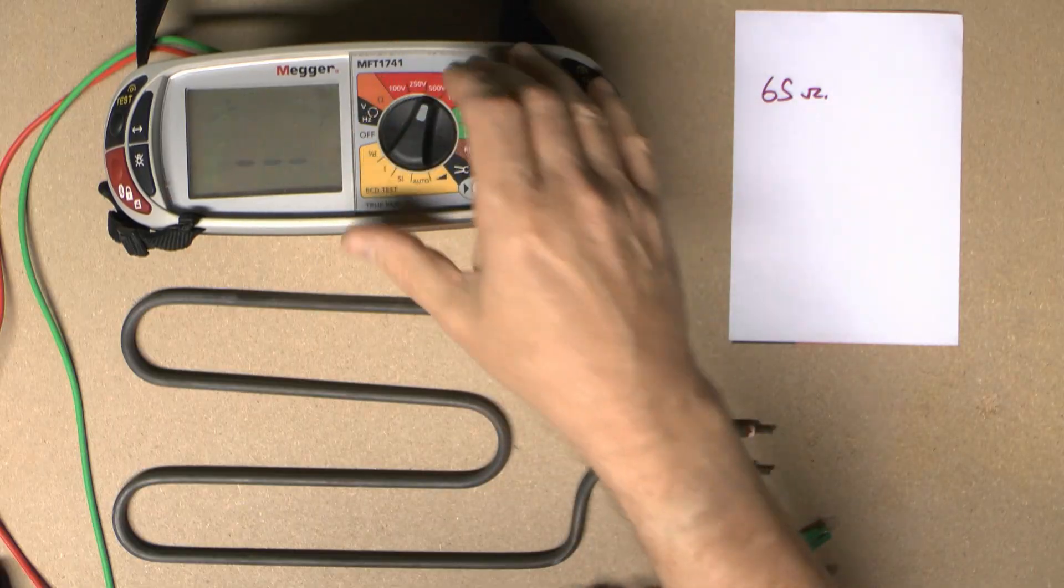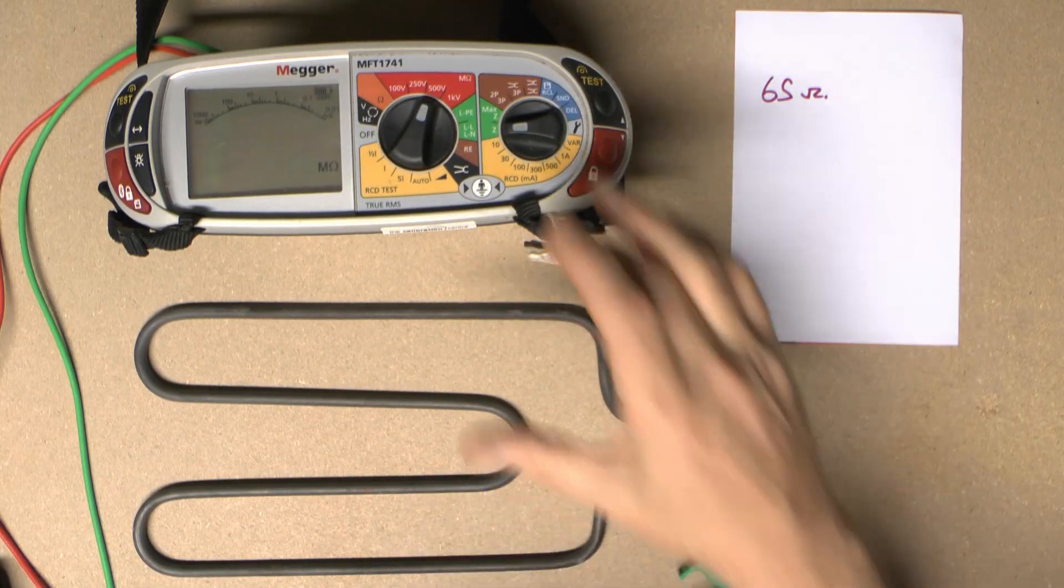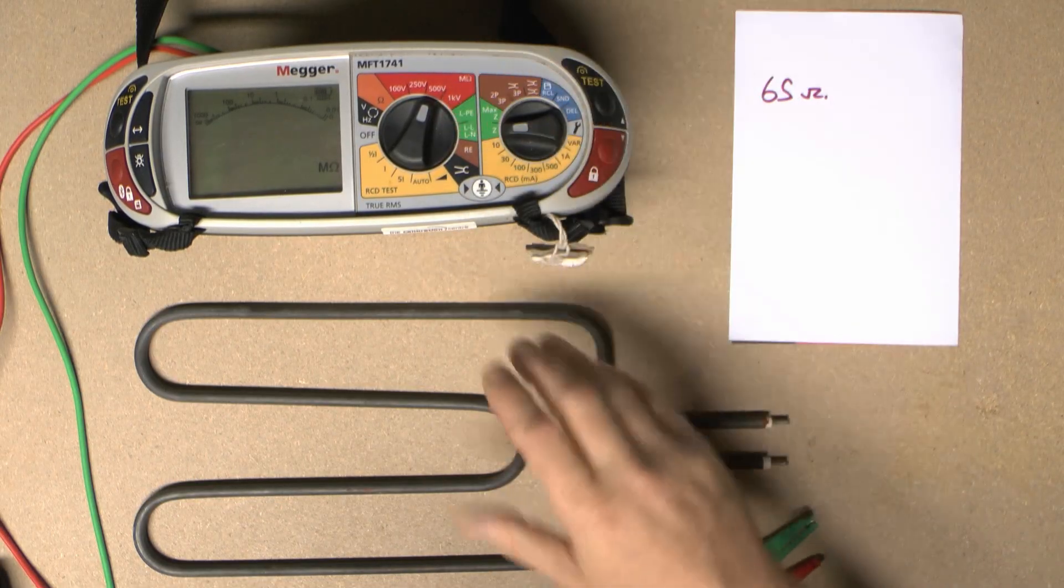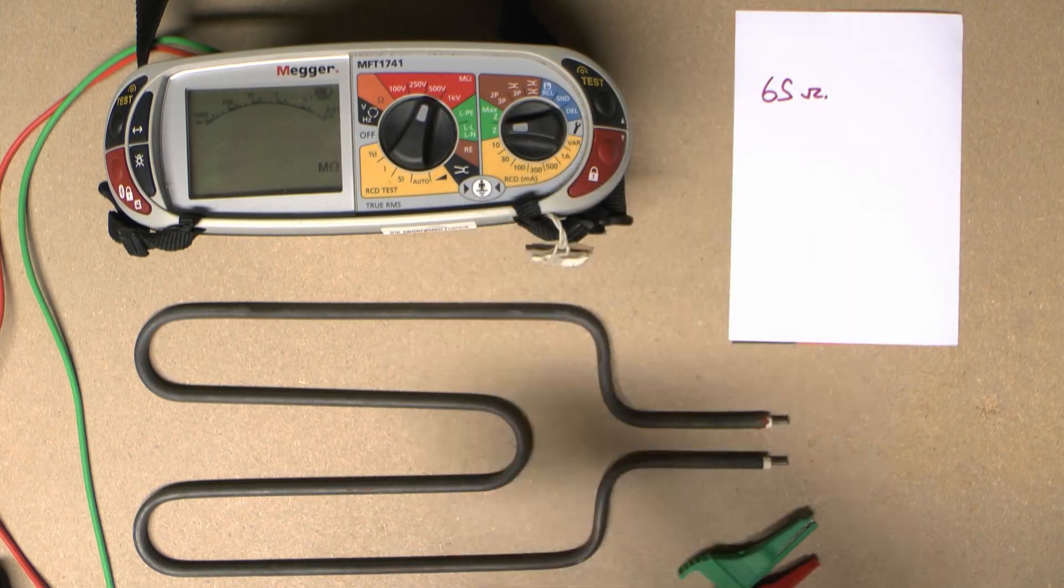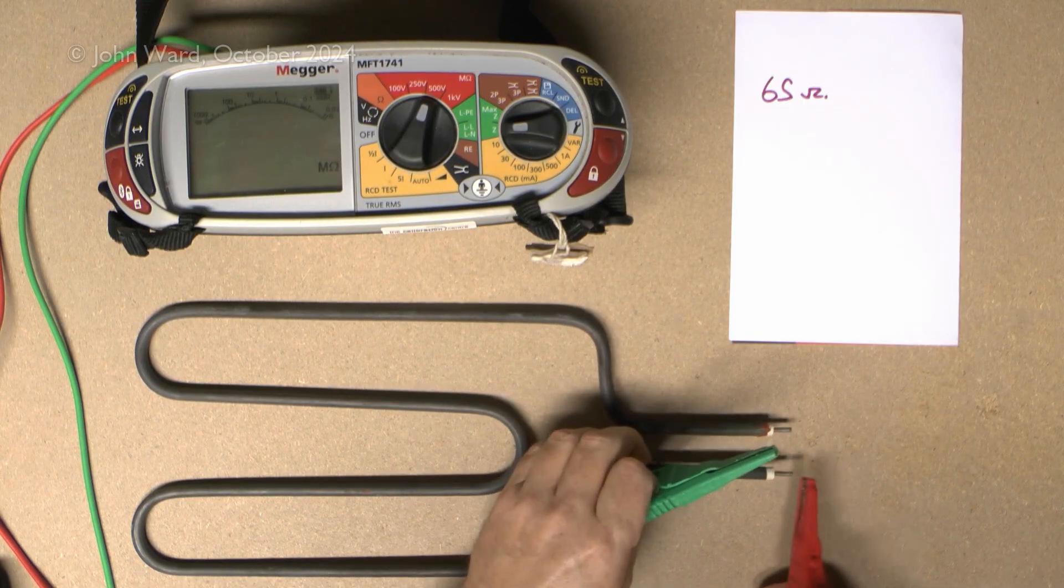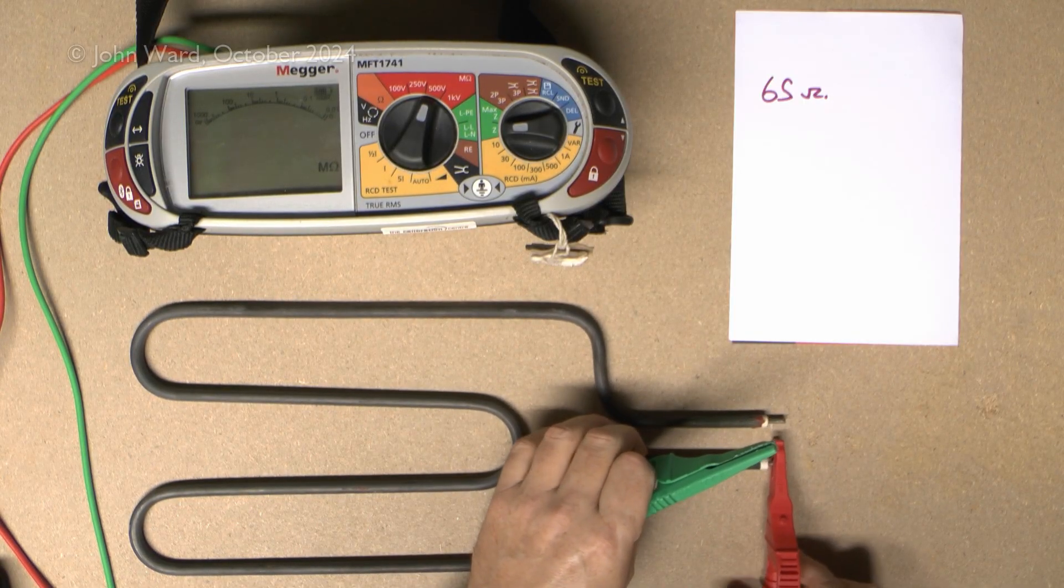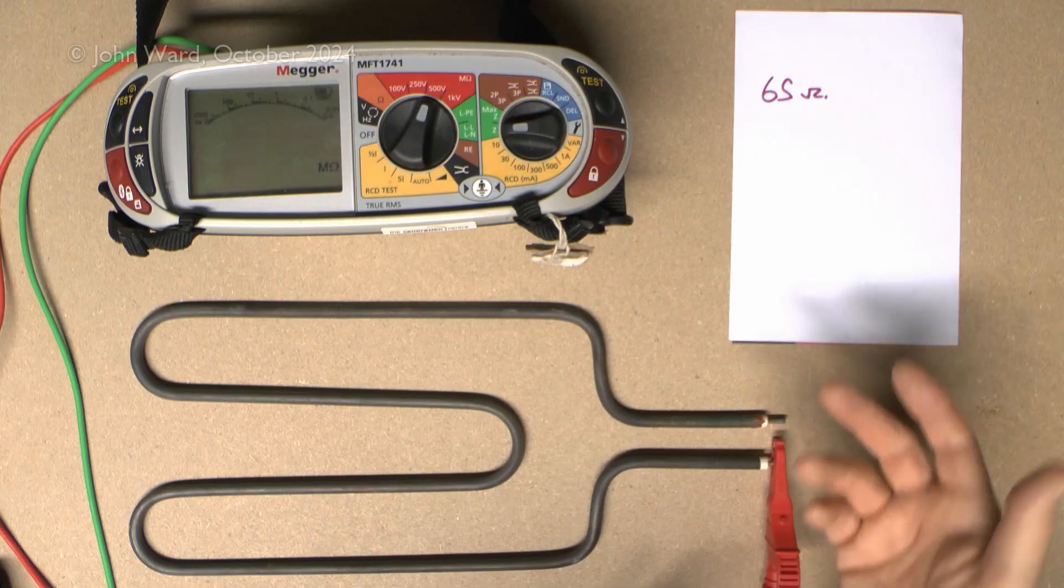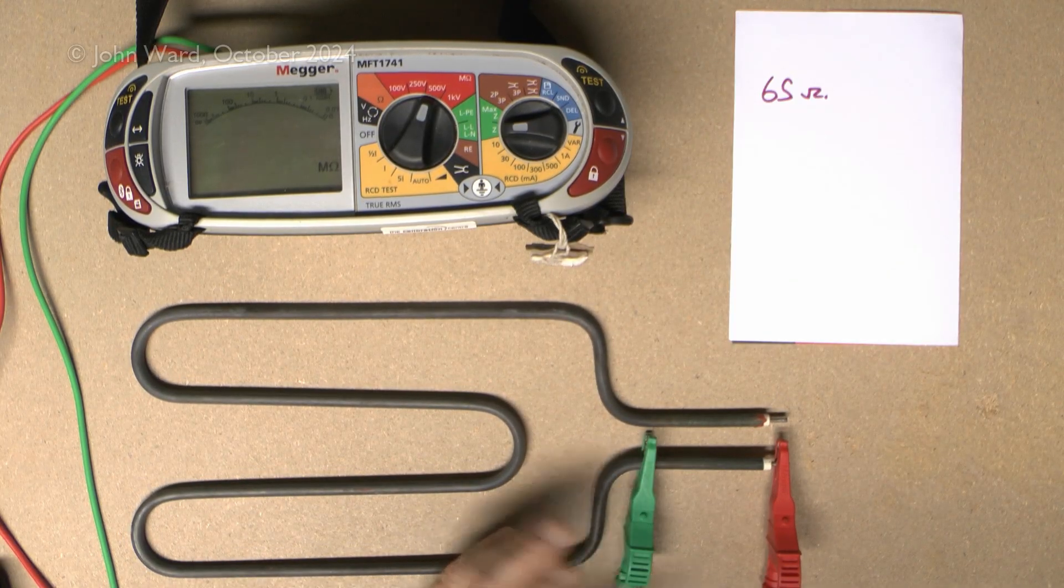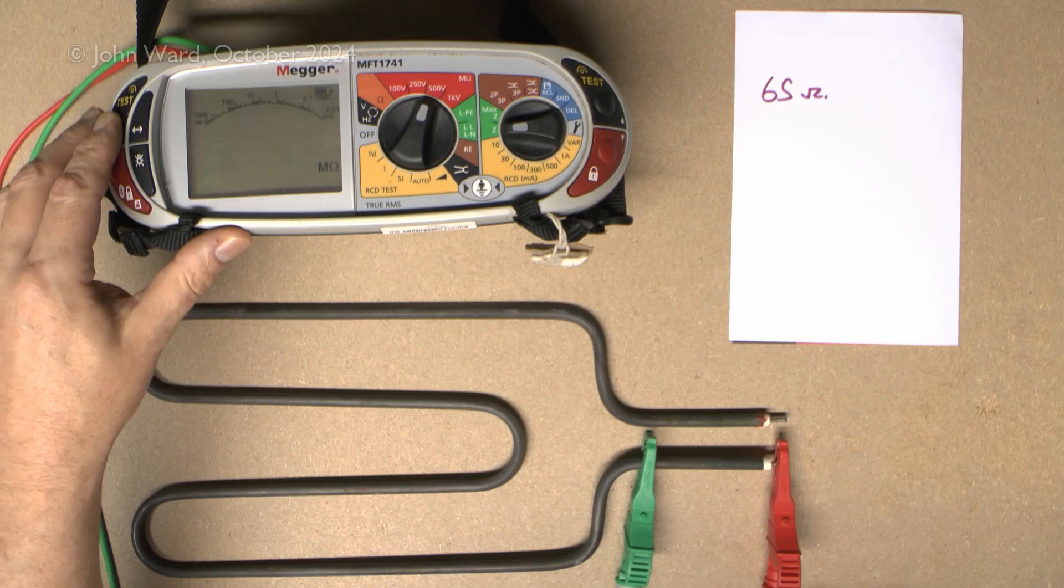The other test is insulation resistance. Just like testing insulation resistance of a circuit, we're going to use the 500V range. This is a 230V element, so that's appropriate. We'll connect between one of the pins—doesn't matter which one, because we just checked there was only 65 ohms between them—and then the metal covering at some point. Then we can test that.